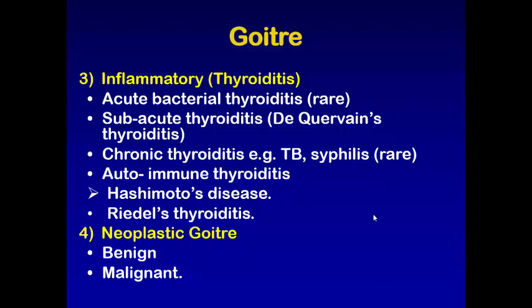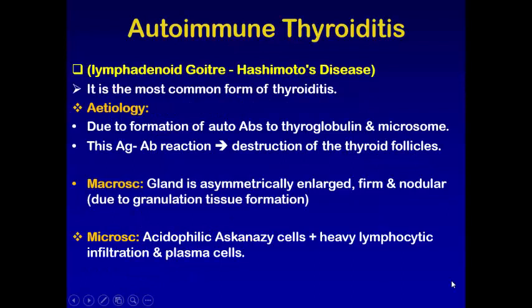Autoimmune thyroiditis is the most common, and the most common disease is Hashimoto's disease. We also have Riedel's thyroiditis. Hashimoto's disease is also called lymphadenoid goiter, which means there is an immunological process that stands behind its pathogenesis.